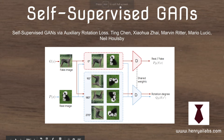This is a deep learning video on self-supervised GANs from Henry AI Labs. The idea of self-supervised GANs is to stabilize generative adversarial network training by adding an auxiliary task where the discriminator has to predict the rotation of the image as well as real versus fake.